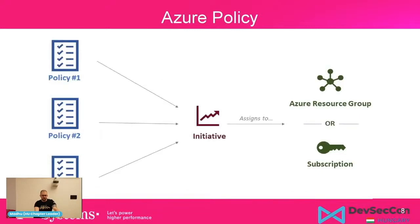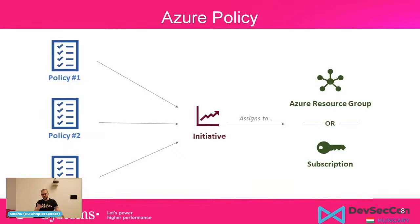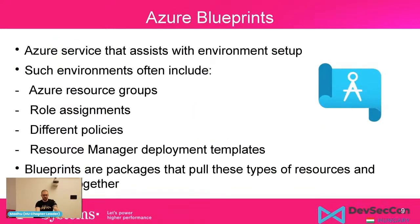In this example, you can see there are three policies. You can collect multiple policies into a subset called an initiative, and you can assign the initiative to Azure resource groups or subscriptions. We'll look at how this is done using code, but first we need to understand Azure Blueprints.